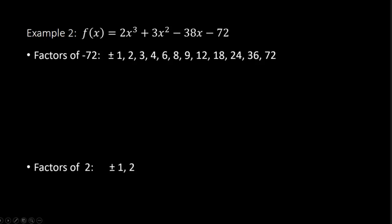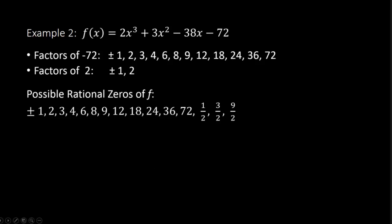Taking all factors of −72 divided by all factors of 2, our possible rational zeros list is: ±1, 2, 3, 4, 6, 8, 9, 12, 18, 24, 36, 72, 1/2, 3/2, and 9/2 — positive and negative for all of those. We have a much, much longer list, so we really want to think about ways to narrow it down as we do the work.